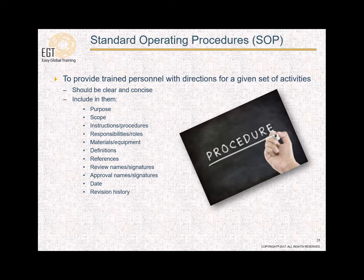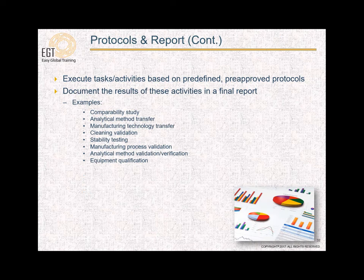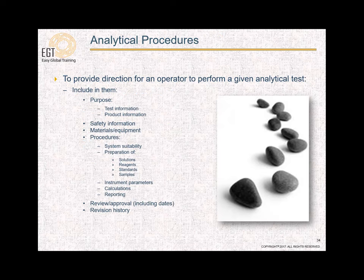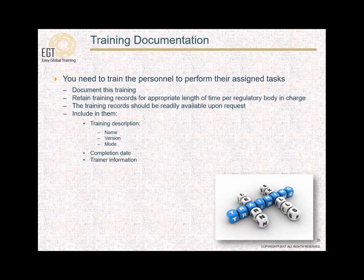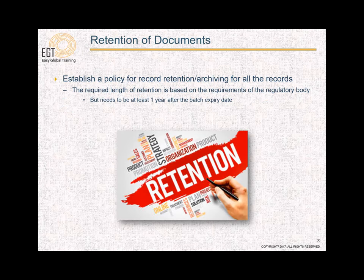The next subject discussed in Chapter 1029 is standard operating procedures, or SOPs. This is followed by protocols and reports, then analytical procedures, and then training documentation. Finally, the last subject discussed in U.S.P. Chapter 1029 is the retention of documents.